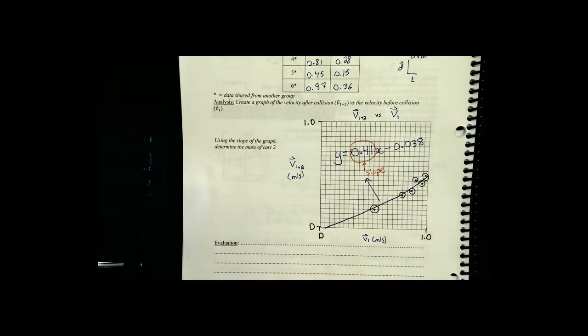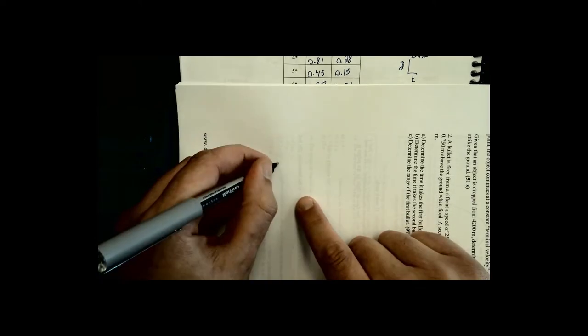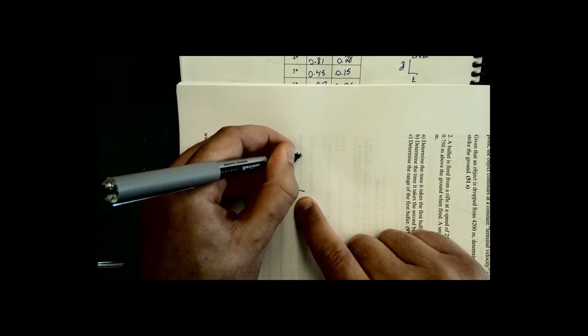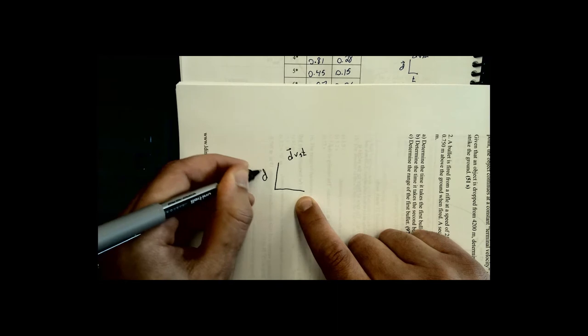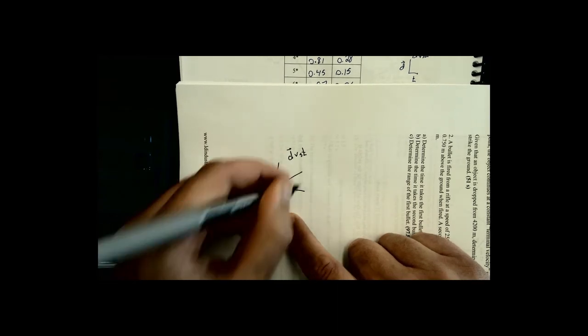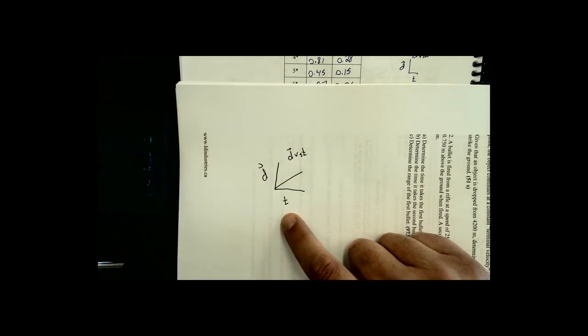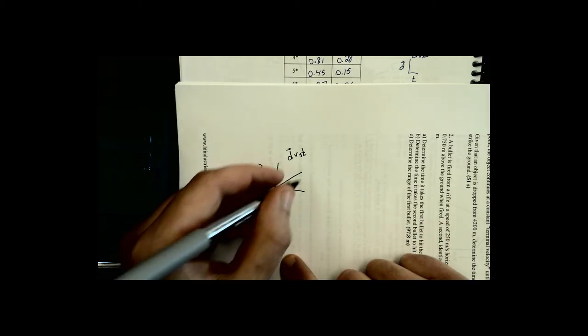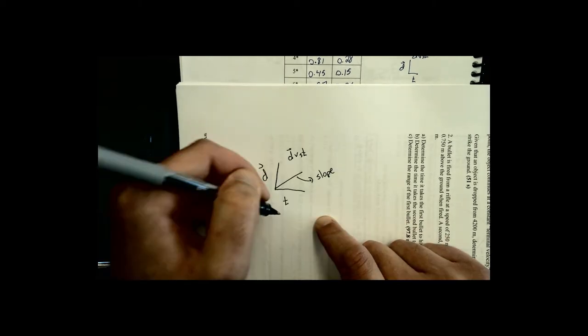To do that, I'm going to go back in time with you a little bit and think back to some of the stuff we used to do with graphs back in Physics 20. Back in Physics 20 or even Science 10, you would get a displacement versus time graph. Maybe it was just a really simple one, it looked like this. Nice linear graph. And if you found the slope of that graph, what did it give you? It gave you velocity.